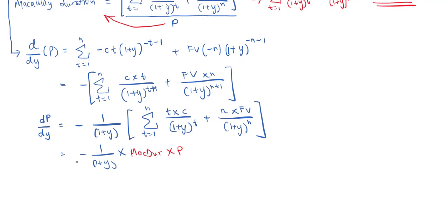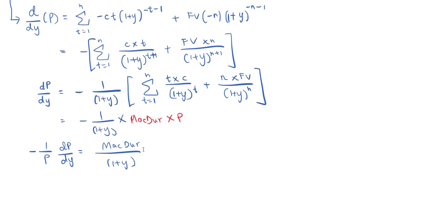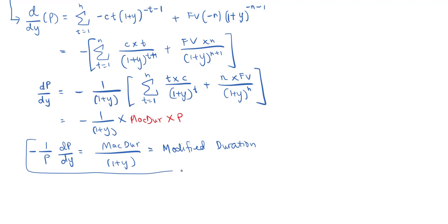Moving the negative sign and price to the left-hand side, we get: negative 1 over P times dP/dY equals Macaulay duration divided by 1 plus Y. This definition is what we call the modified duration. That's why we divide Macaulay duration by 1 plus Y to get the modified duration, which equals negative 1 over P times the first derivative of price with respect to yield to maturity. Hopefully this helps you understand why we divide Macaulay duration by 1 plus Y to obtain the modified duration.